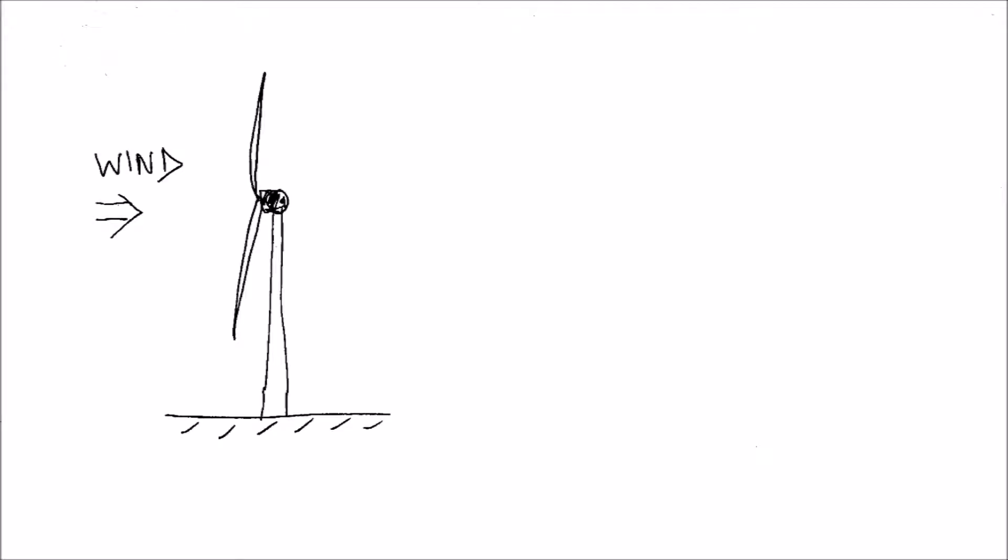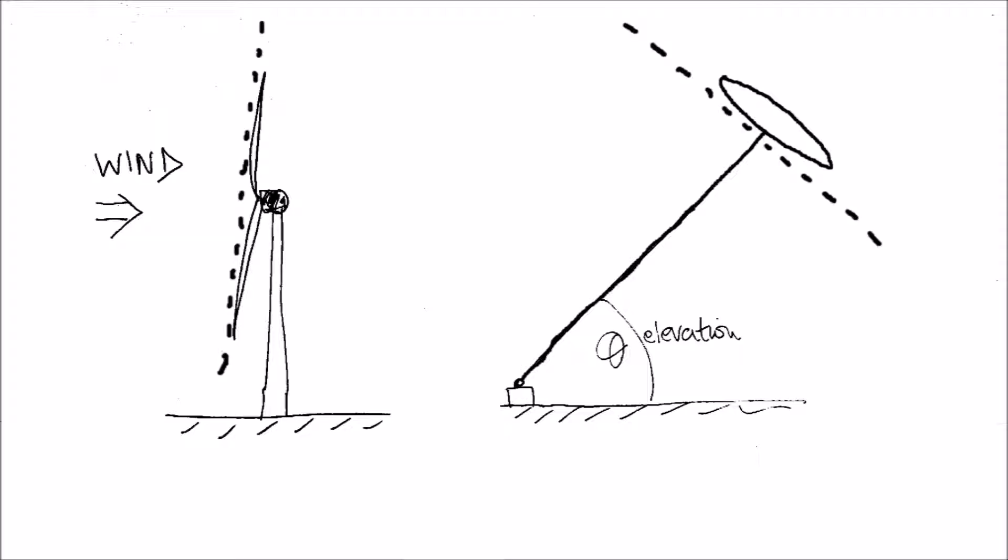The AWE maximum power assumes that the wind is face on, like a conventional wind turbine, but due to the tether inclination, it's at an elevation angle, typically about 30 degrees.